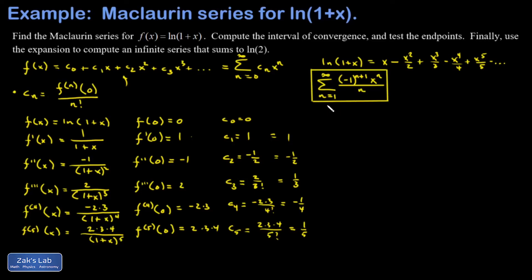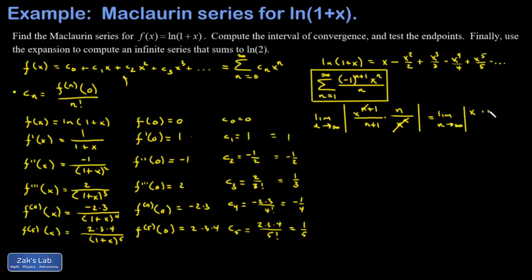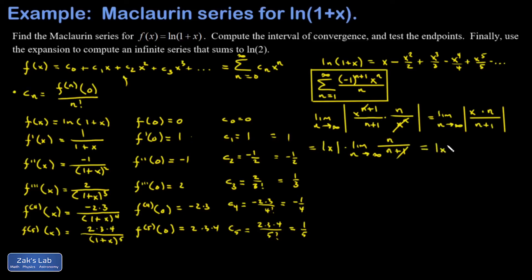Next, we're asked to find the interval of convergence for this, so we apply the ratio test. The absolute value bars are going to kill the negative 1 part, so I'm not concerned with that. I write down my n plus 1 term, divide by the nth term — which is the same as multiplying by the reciprocal — and cancel out n factors of x. This leaves me with a single x in the numerator and n in the denominator, with n plus 1 in the denominator. The x is a constant with respect to the limit, so I can pull that absolute value of x out in front. The n's are positive, so I drop the absolute value bars. In this limit, the largest power of n dominates, so this 1 is a negligible correction, giving me the limit of n over n, which is 1. I end up with just the absolute value of x.